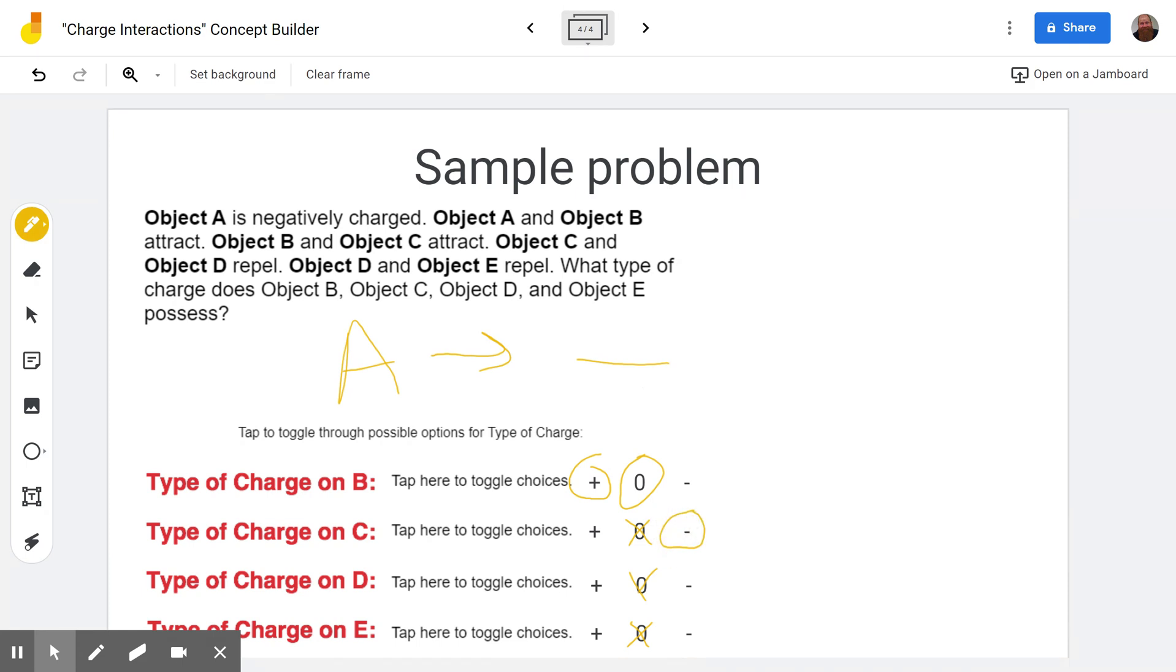But what if B is neutral? Well if B is neutral, B attracts to C. That means C would have to have a charge, which we already know it does because C repels from D. And so if this is neutral, it could be either positive or negative.